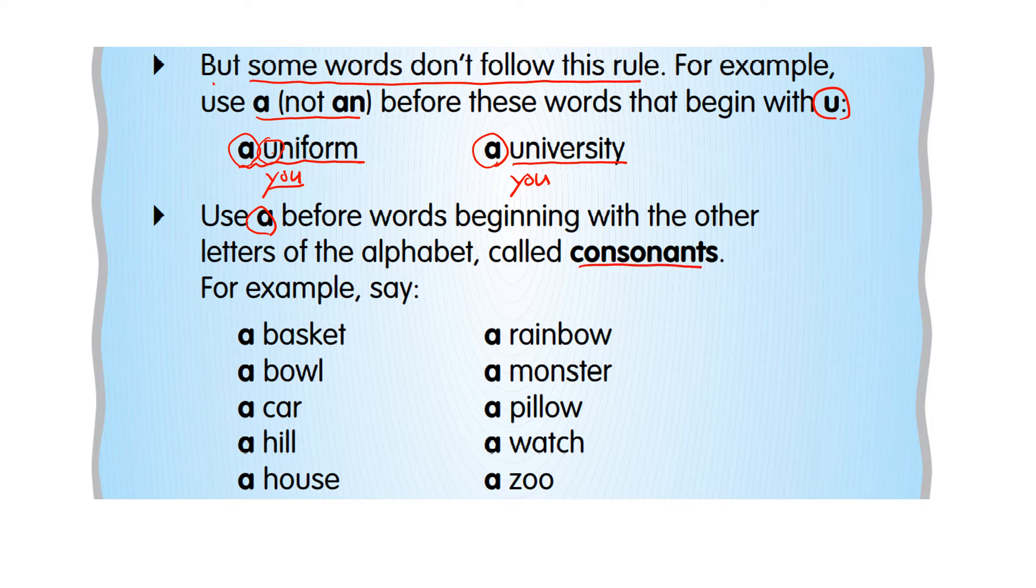Use a before words beginning with other letters of the alphabet. They are called consonants. A, E, I, O, U, they are called vowels. The rest of them, they are consonants.